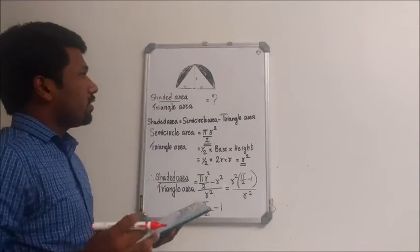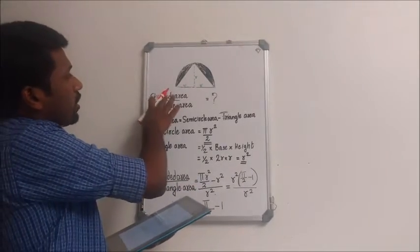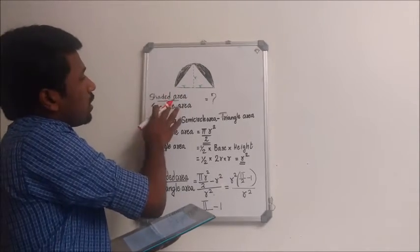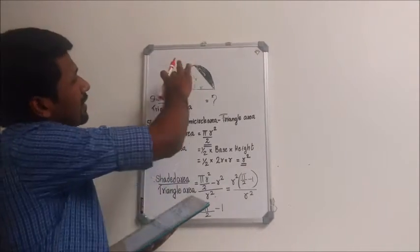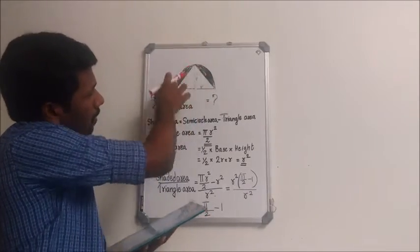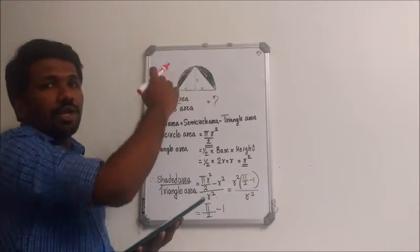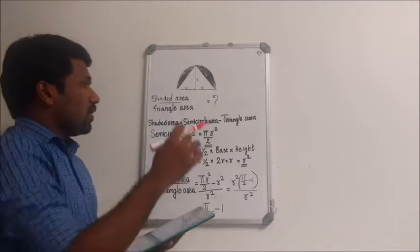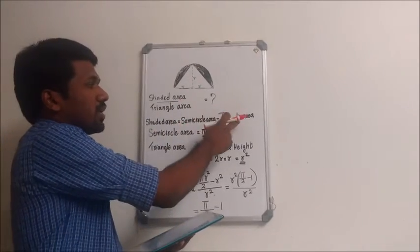So we are required to find the ratio of area of the shaded region to the area of the triangle. The shaded region is actually semicircle region minus this triangle region. So area of the shaded region will be area of the semicircle minus area of this triangle.